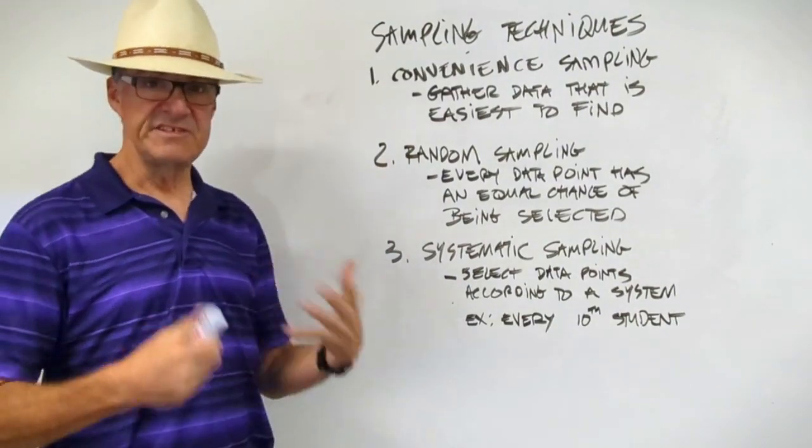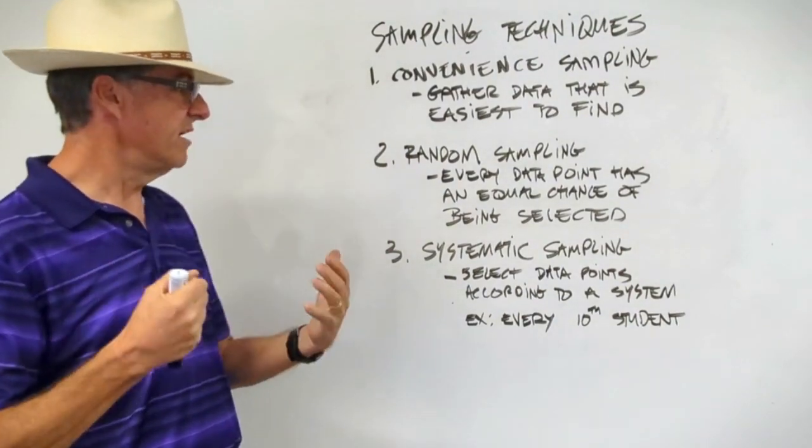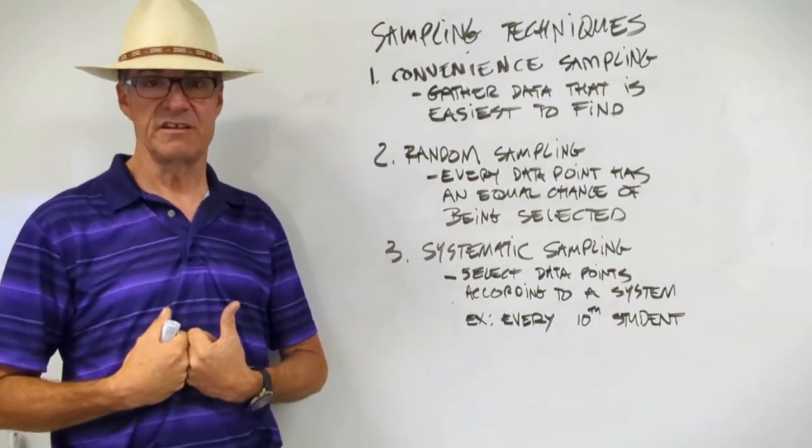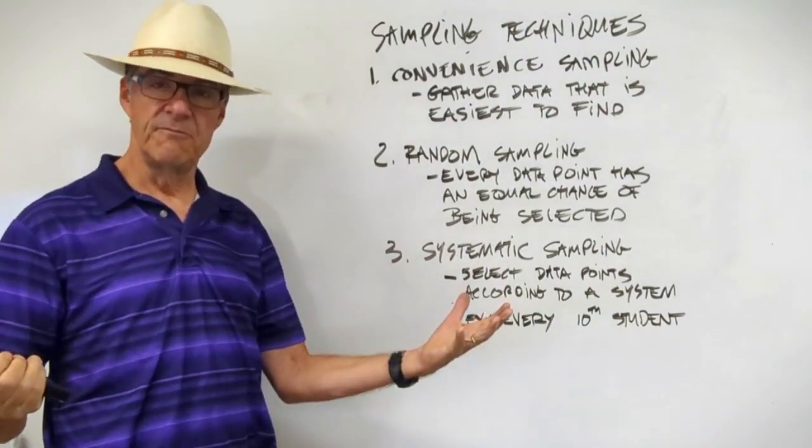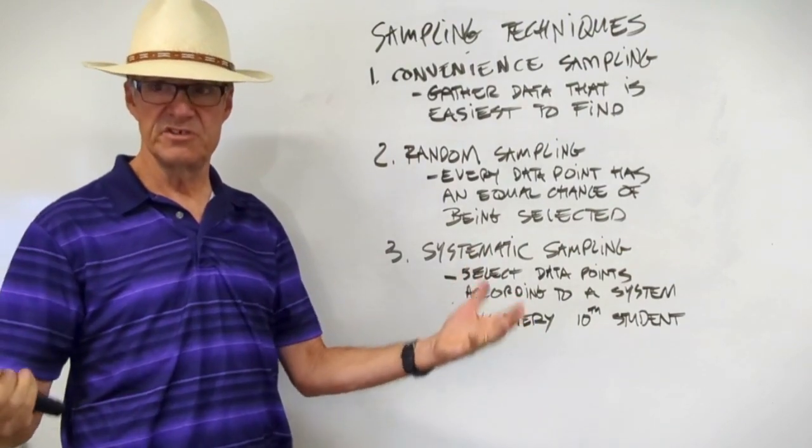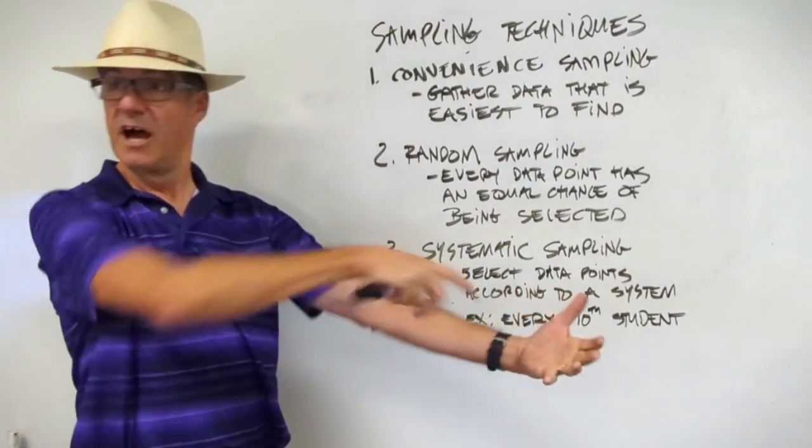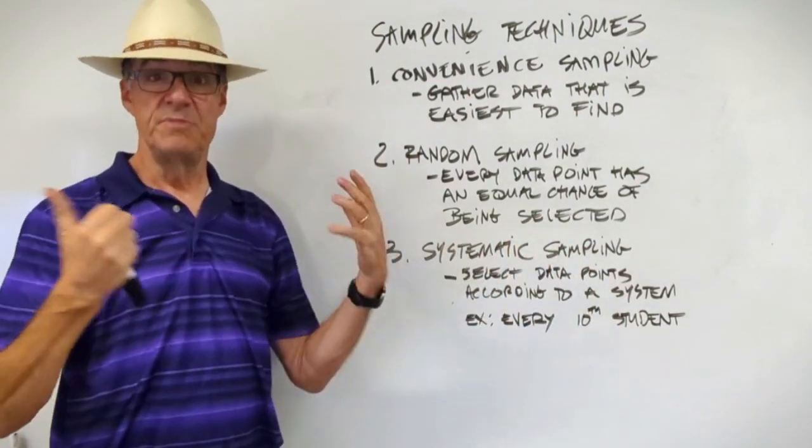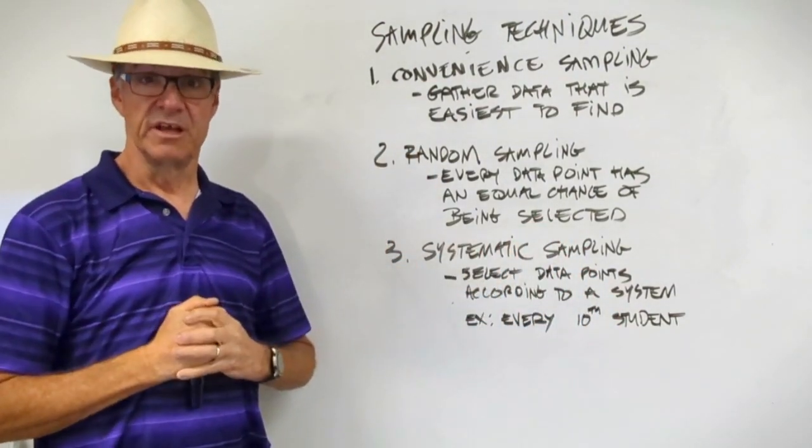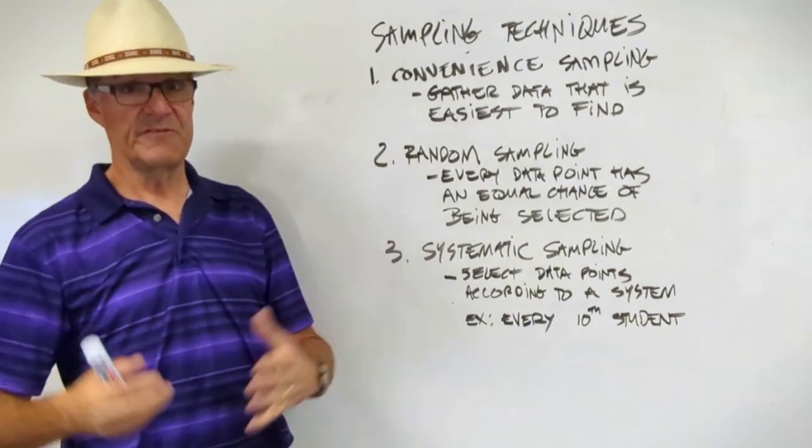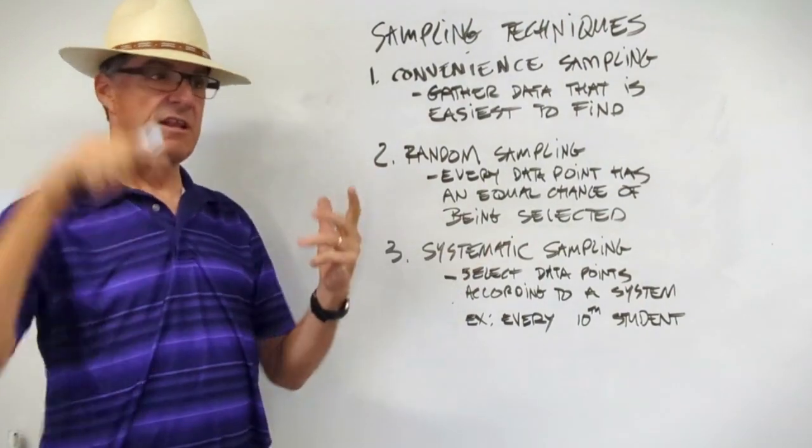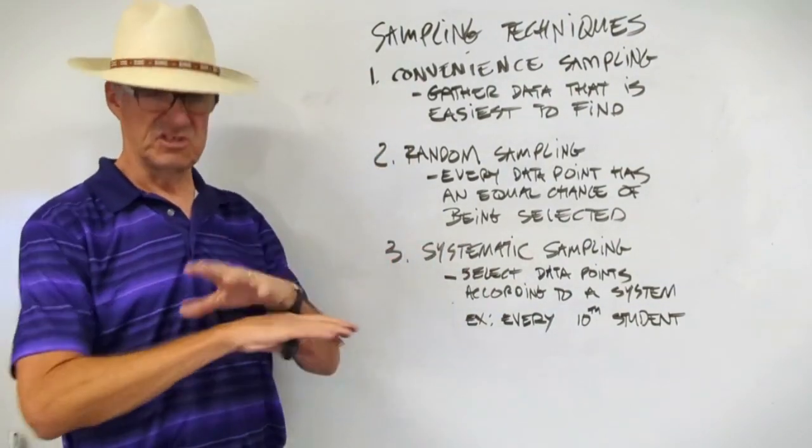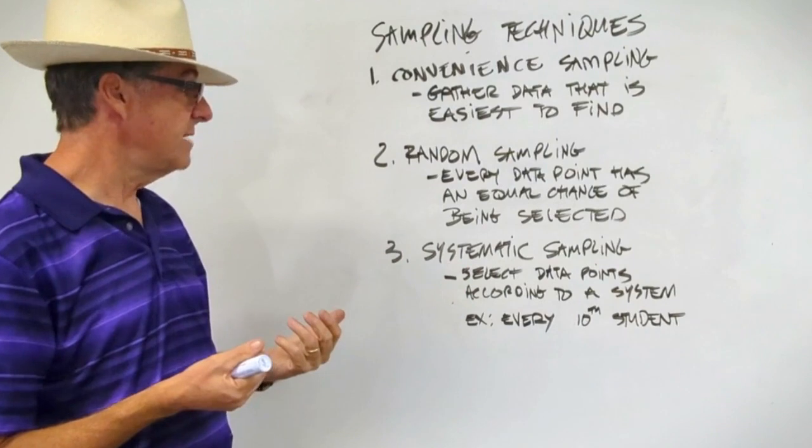Random sampling. This has the feeling of being much, much better. Every data point that's out there has an equal chance of being selected. This could be in a classroom full of students, say 30 students. You put everybody's name in a hat and you just draw five names at random to ask your survey questions. That would be truly random sampling. You could also go through a city's phone book and just figure out like open a page, pick a name, open another page, pick a name, have some kind of technique so that it's truly random. That would be random sampling.